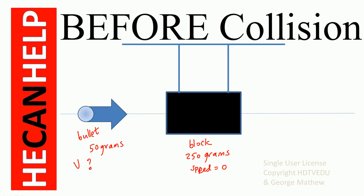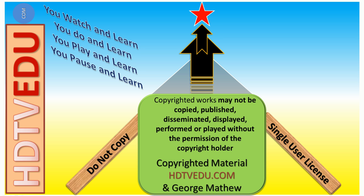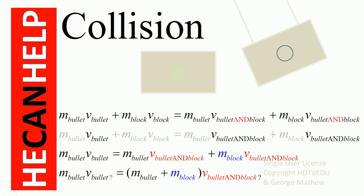The information we know: after collision they both move together to a height h equal to 0.12 meters. We are given the mass of the bullet — 50 grams — and the mass of the block — 250 grams. The block is at rest before collision. After collision, the total mass moving together is 250 plus 50 grams.